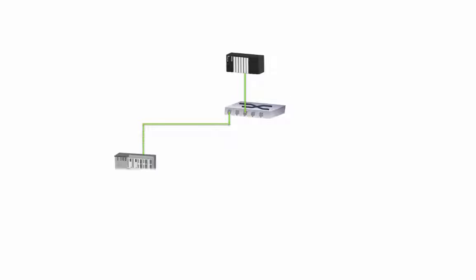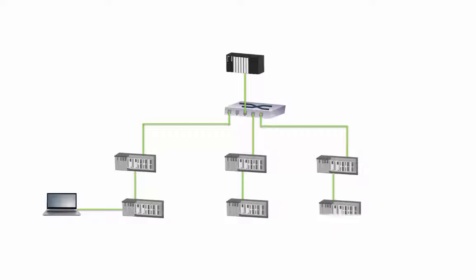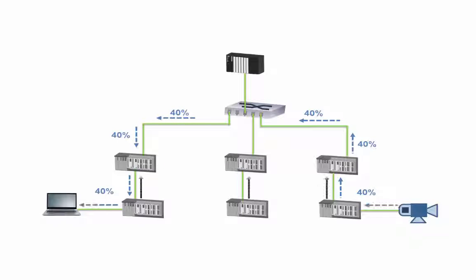PROFINET is an Ethernet-based communication protocol. Participants communicate in parallel and independent from each other. PROFINET uses a switched medium with 100 Mbit full duplex, so identical information is therefore only available from point to point.